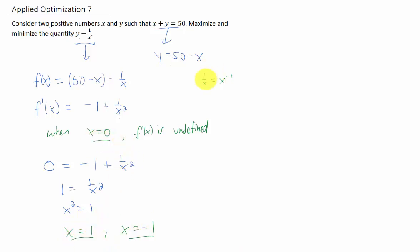Let's also go back to this original function and discuss an interval. So the problem says that x and y both have to be positive, which would mean that 0 would be the smallest value that would work for x, and I guess 50 would have to be the largest possible value of x.